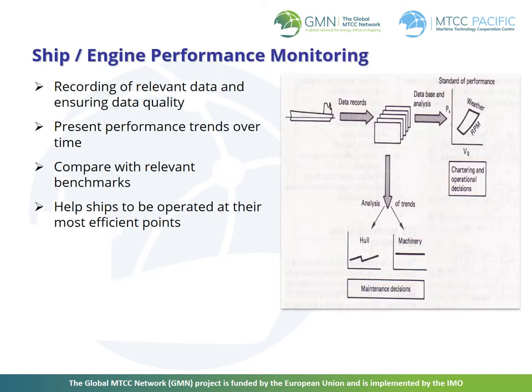Monitoring of ship and engine performance to achieve the efficiency of ships can be achieved by recording relevant data and ensuring data quality. Having regular monitoring on factors that influence ship performance, such as fuel consumption, speed loss and trim optimization, can help operators to keep track of the vessel's condition and how they are performing. Performance trends can then be presented over time to compare them with relevant benchmarks.